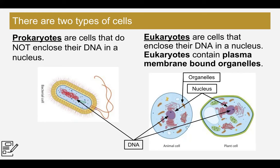Then we have eukaryotic cells — eukaryotes are cells that enclose their DNA in a nucleus. Eukaryotes also contain plasma membrane-bound organelles: little structures inside of them that help them function. Prokaryotes are mostly cytoplasm — the jelly-like substance inside — and in that cytoplasm the DNA is there, along with some other things we'll talk about.